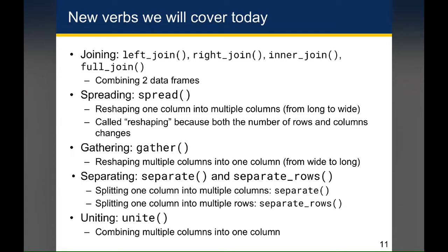Spread helps us take one column and convert it into multiple columns, so we often think of it as taking long data and making it wide. Whereas gather takes multiple columns and gathers it down into one column, so we think of taking a wide data frame and making it long. Both of those are reshaping verbs because they alter the number of rows and columns in the data frame, so the actual dimensions of your data frame are different than what they were before.